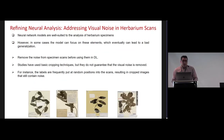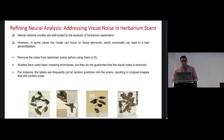Deep learning neural network models are well suited to the analysis of herbarium specimens while making abstraction of such visual noise. However, in some cases the model can focus on these elements, which can eventually lead to bad generalization. It is therefore important to remove the noise from the images before using them in model training and testing, in order to improve performance.